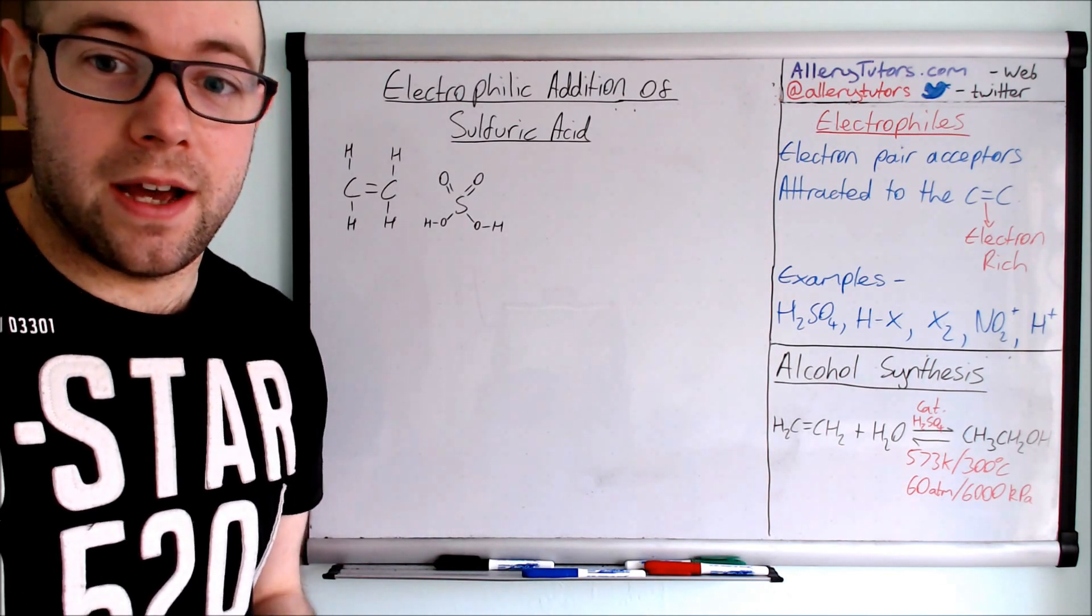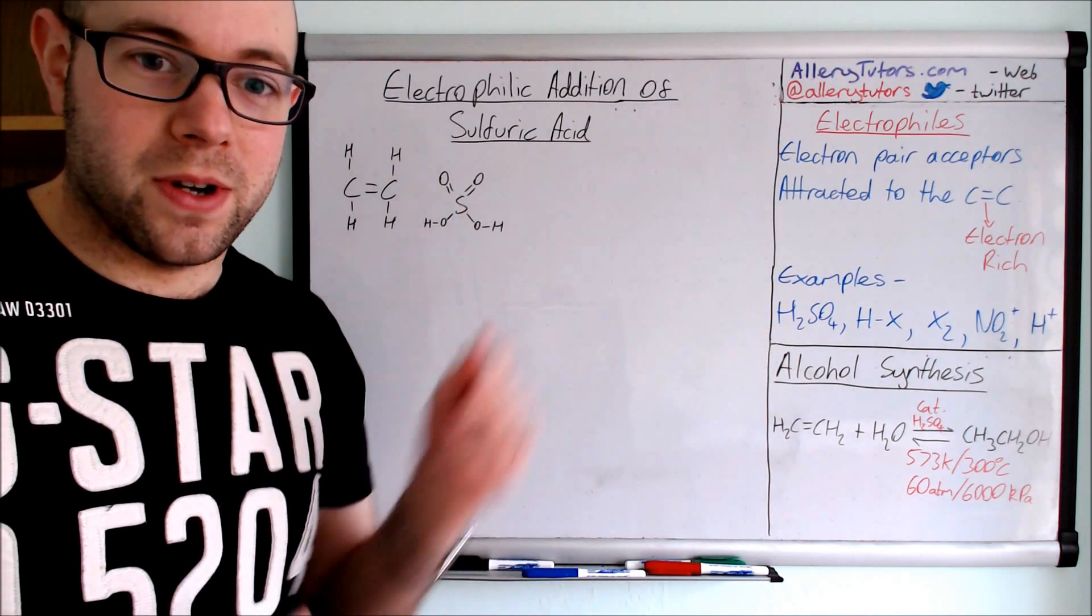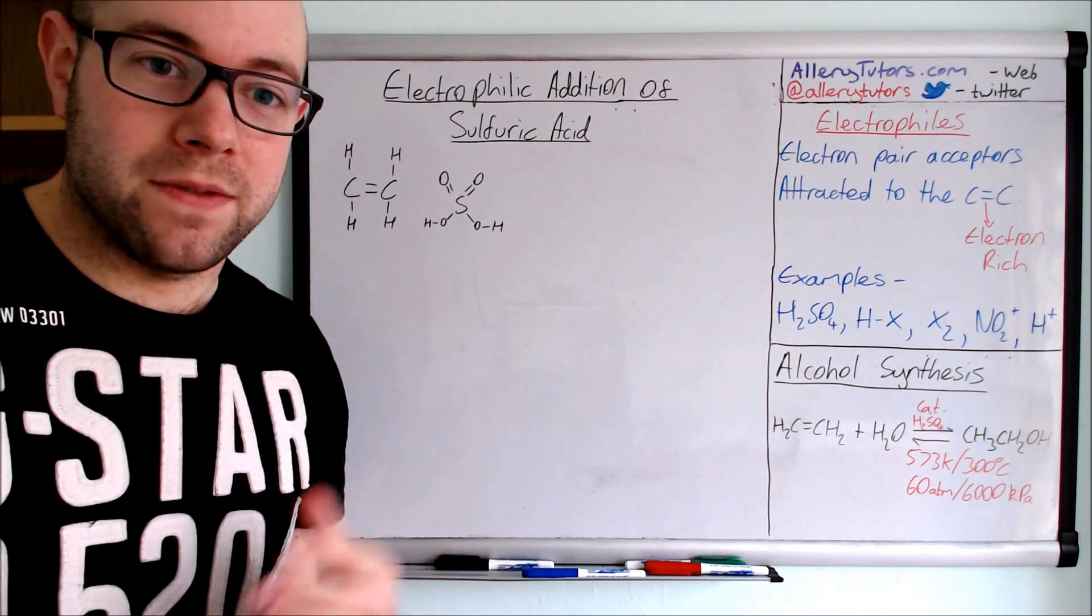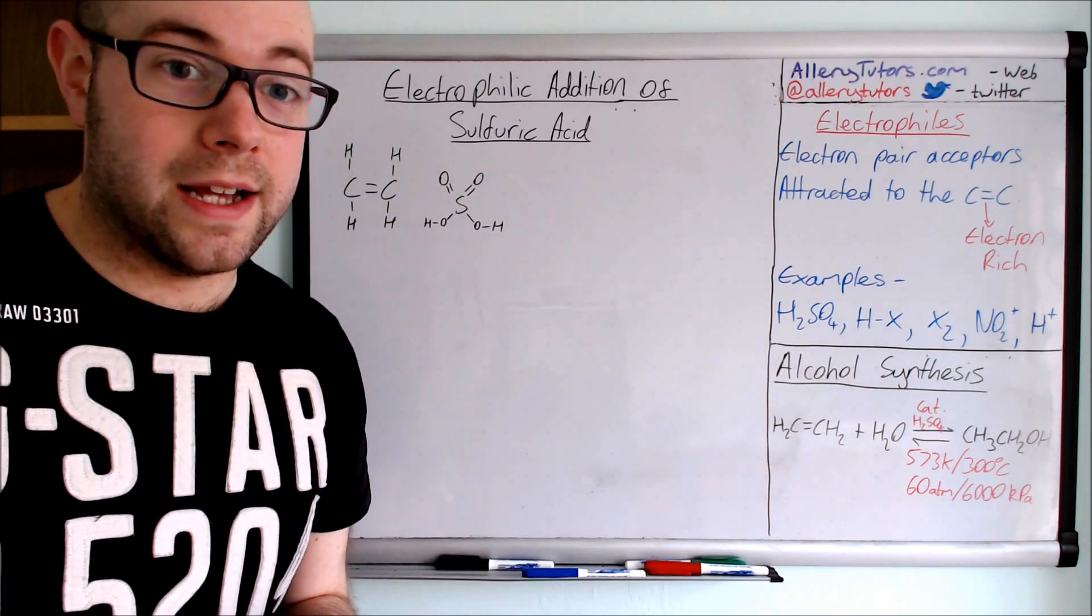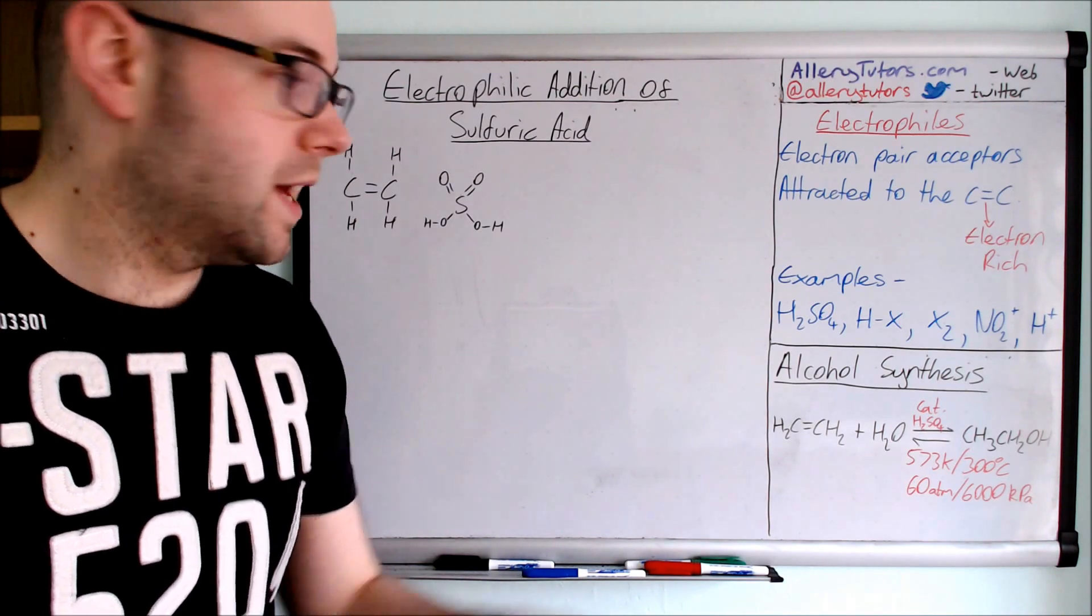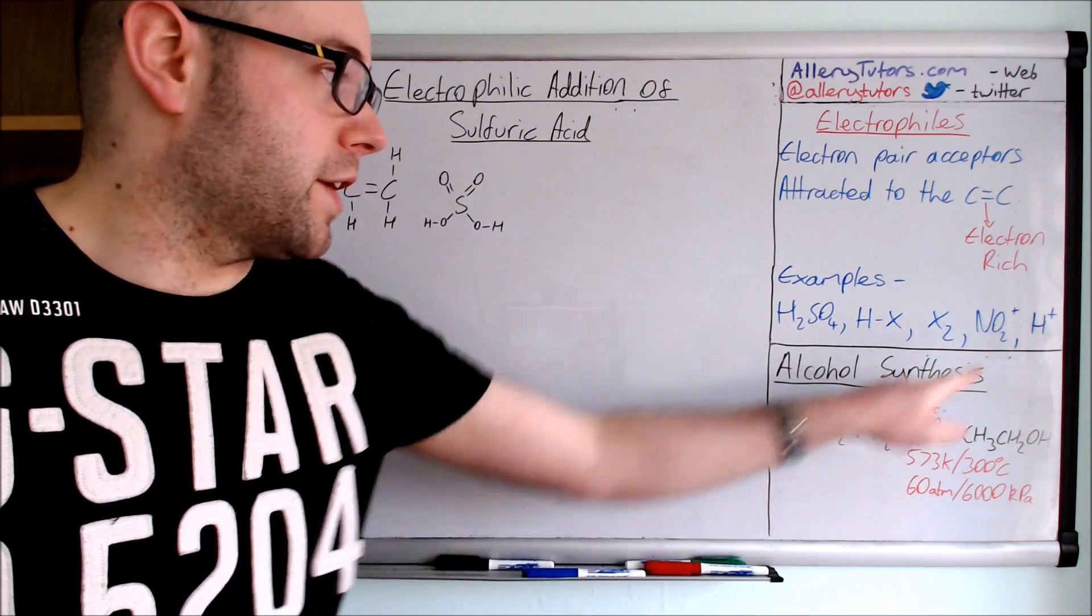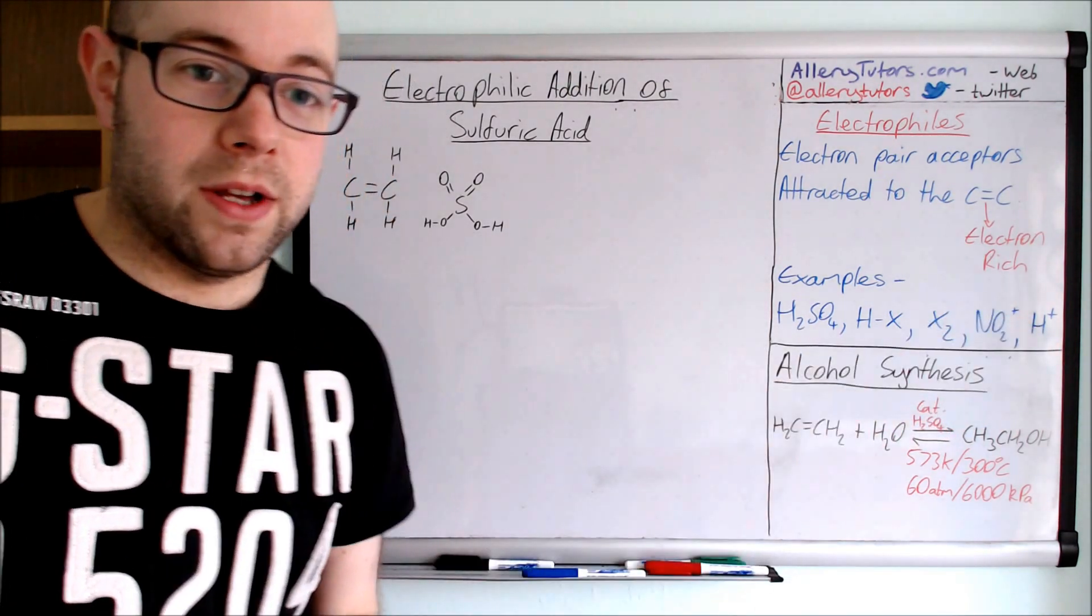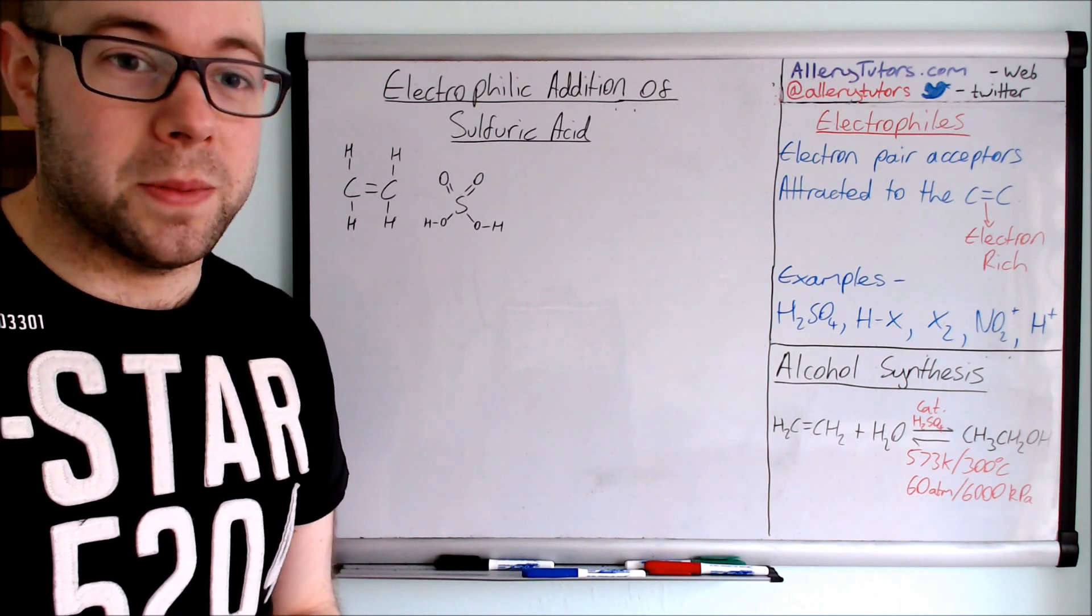Examples of electrophiles include sulfuric acid, which we're going to look at today because we've got the diagram shown here. We've got this polarity as well that gives us a delta positive, so that makes it an electrophile. We've also had hydrogen halides as well. We've done videos on hydrogen halides within the alkenes playlist. Also halogens as well, we've done that as well. It could link in with nitrates as well. And also H+, which again we've done a video on looking into the addition of hydrogen onto an alkene to form an alkane.